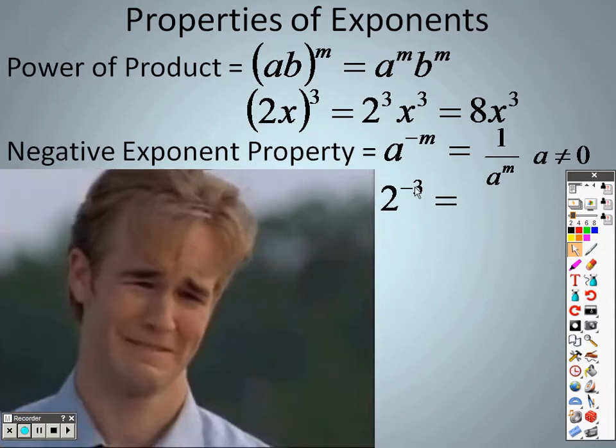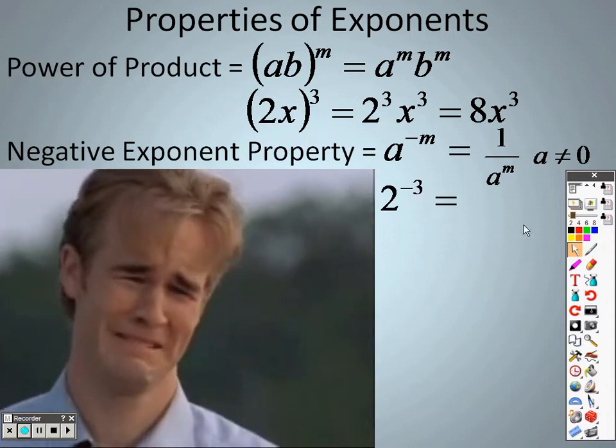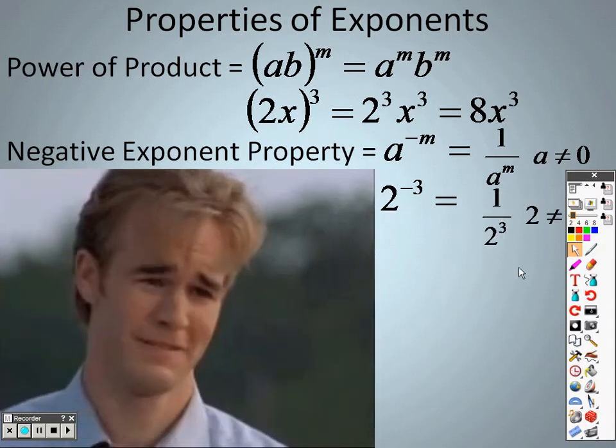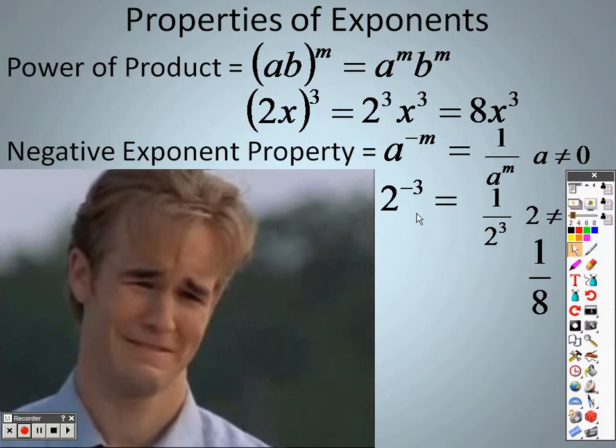So I have 2 to the negative 3. What that means is I'm going to rewrite that as 1 over 2 to the 3rd. And 2 to the 3rd is 8. Remember, no negative exponents.